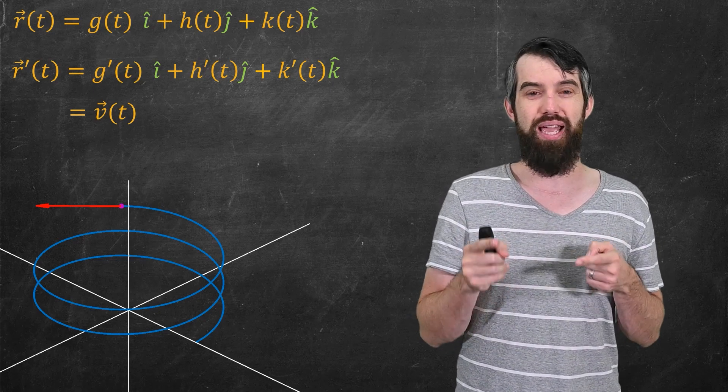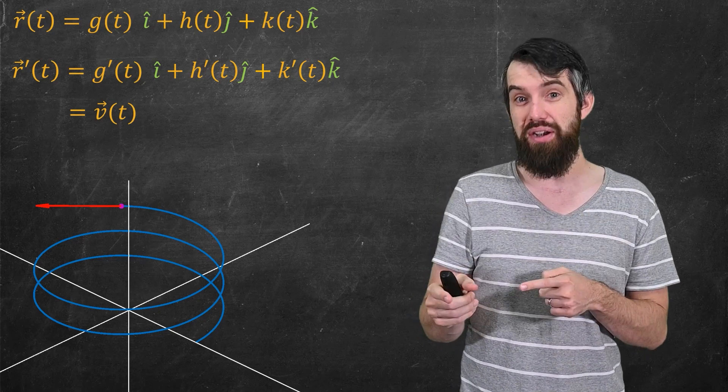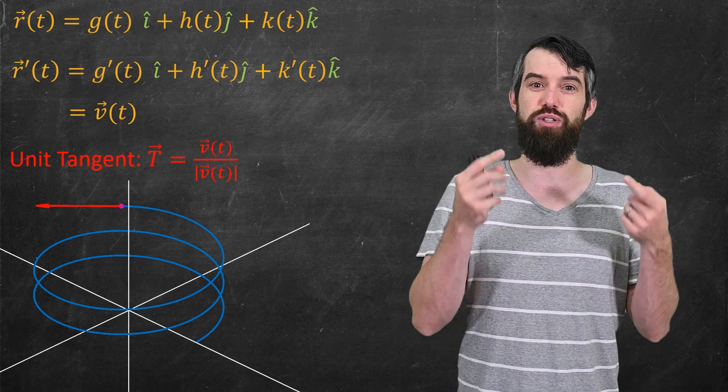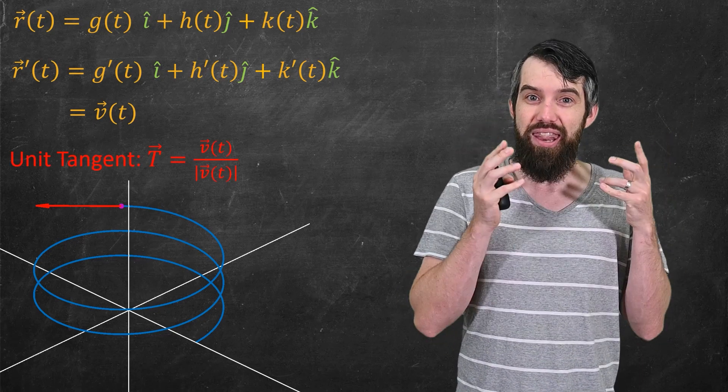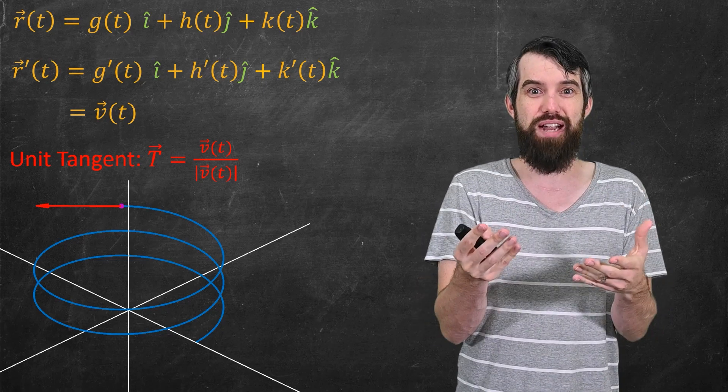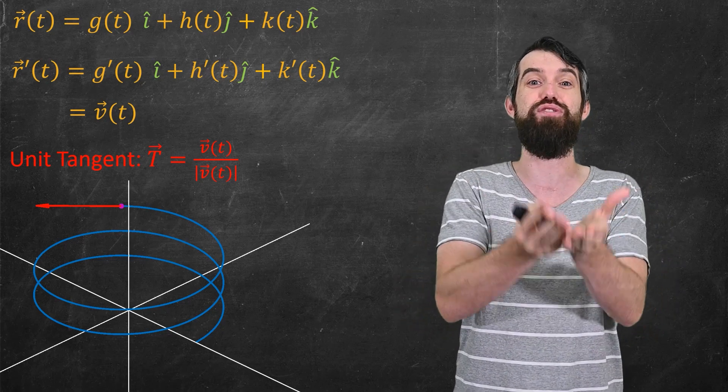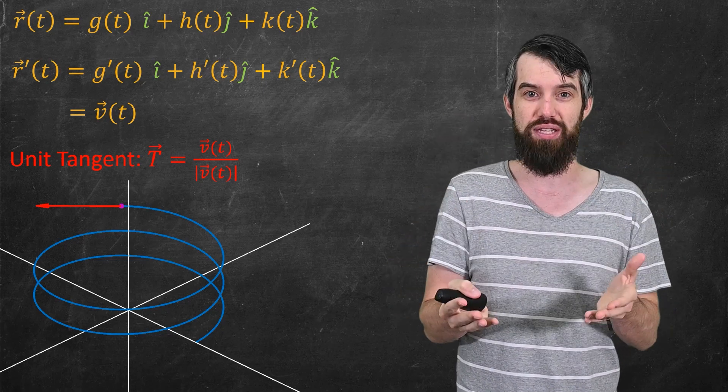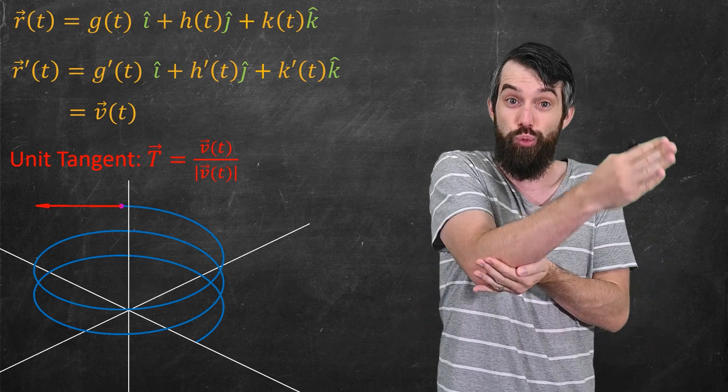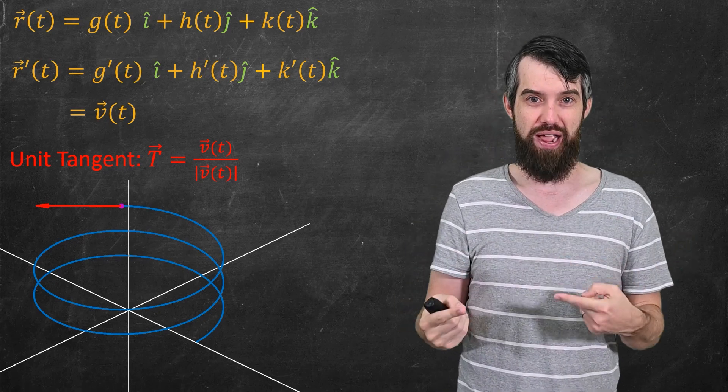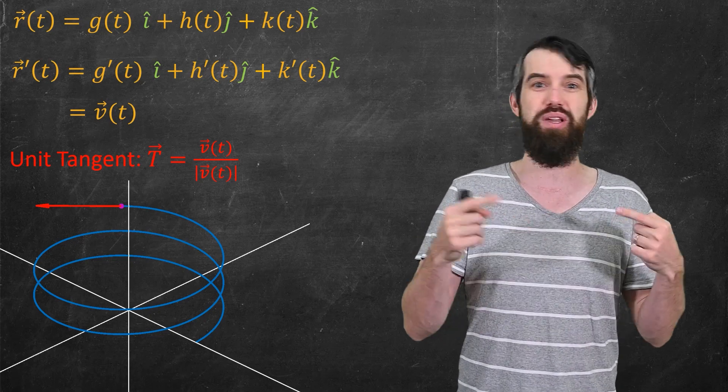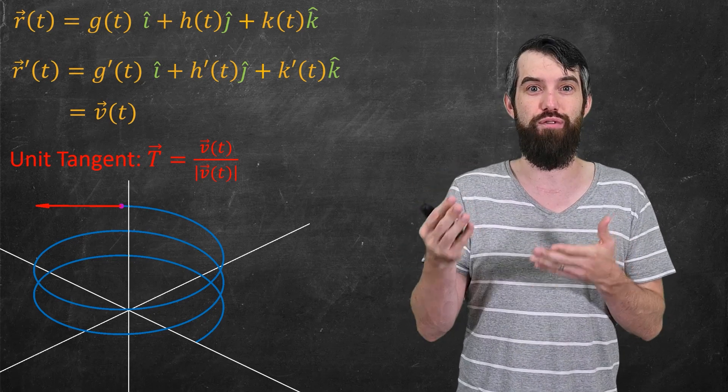The only thing is, it might not be a unit vector, and so it's convenient to come up with a new piece of terminology which we call capital T, and this vector is just the velocity vector but normalized. So the velocity vector divided by the length of the velocity vector, and this just tells you the direction of the tangent vector without caring about what its actual length is. And we use this T vector all the time in our formulas.